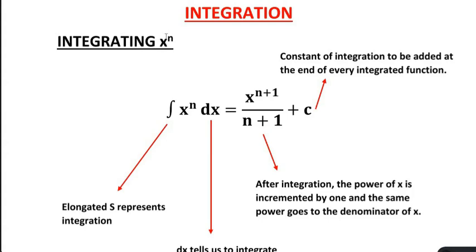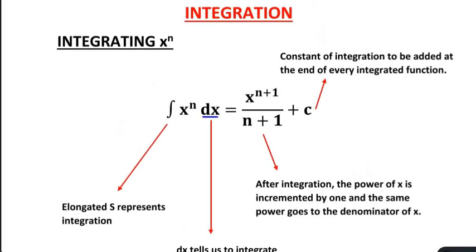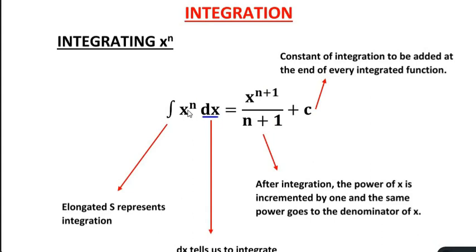We will look at integrating a term which is in the form of x to the power of n. This elongated S represents integration. So integration of x to the power of n dx — where x to the power of n is the term we need to integrate with respect to x — gives us x to the power of n plus 1 over n plus 1.